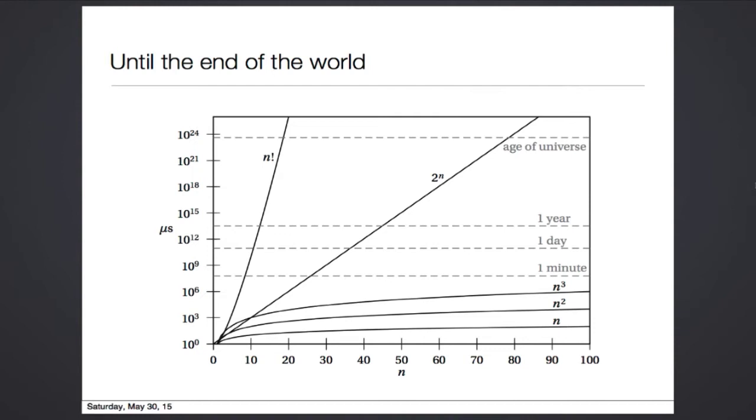But for a problem that takes 2 to the n time, by the time you have inputs of size 25 or so, you've surpassed a minute. By the time you get up to inputs of size 80, the amount of time it takes for this algorithm to finish is larger than the age of the universe. And for n factorial, this is even worse. The age of the universe is reached by n factorial when n is only around 20.